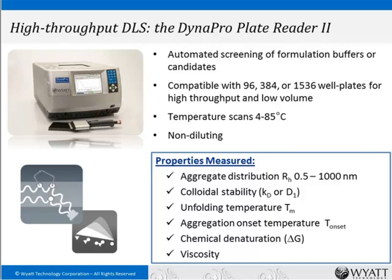The properties measured by dynamic light scattering include distribution of aggregates from 0.5 to up to 1,000 nanometers in radius, colloidal stability, unfolding temperature TM, and the temperature for onset of aggregation. You can also characterize chemical denaturation and the viscosity of your solution — which is important for highly concentrated proteins in order to assess injectability and processing.